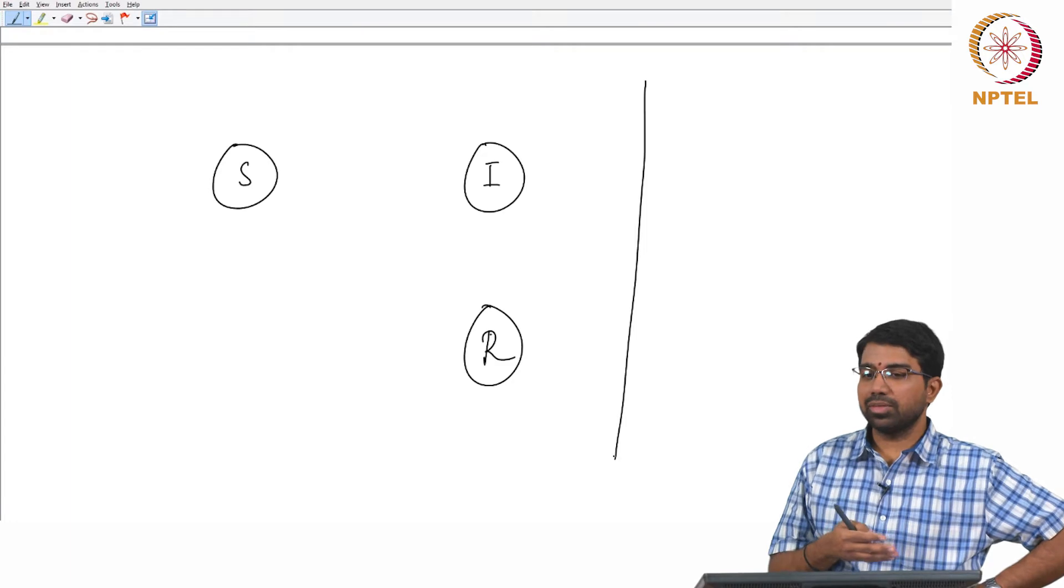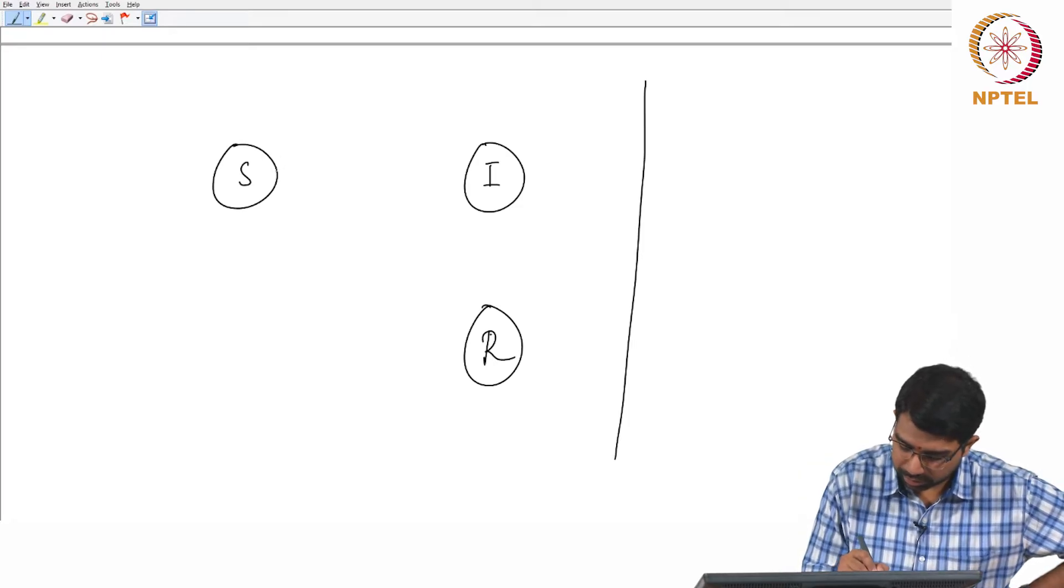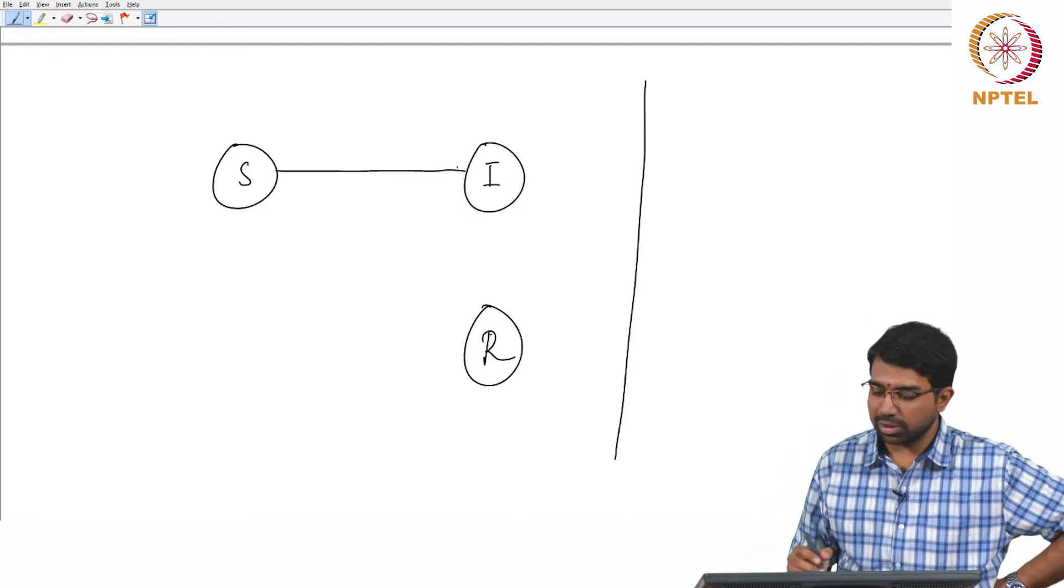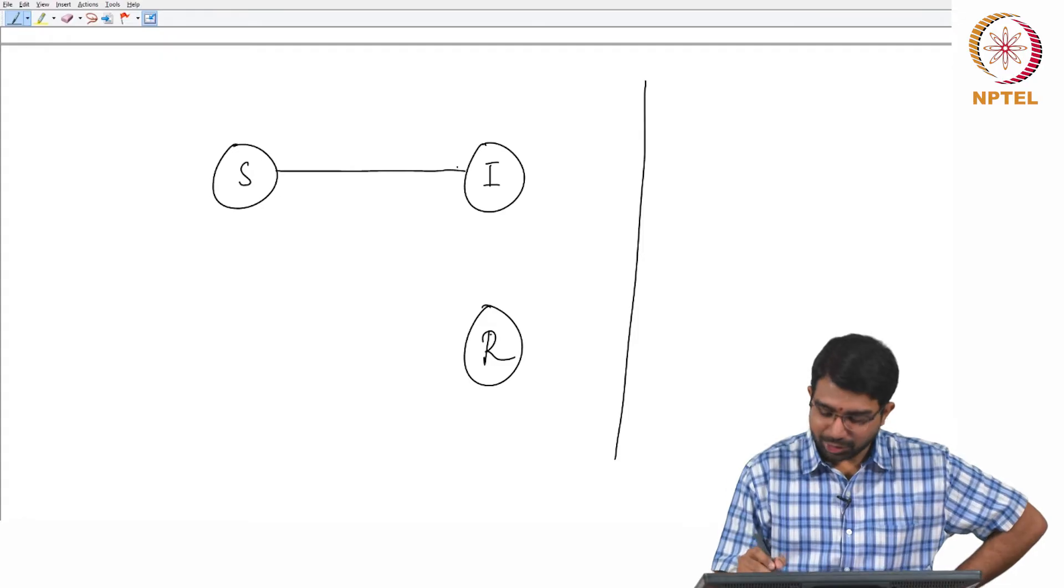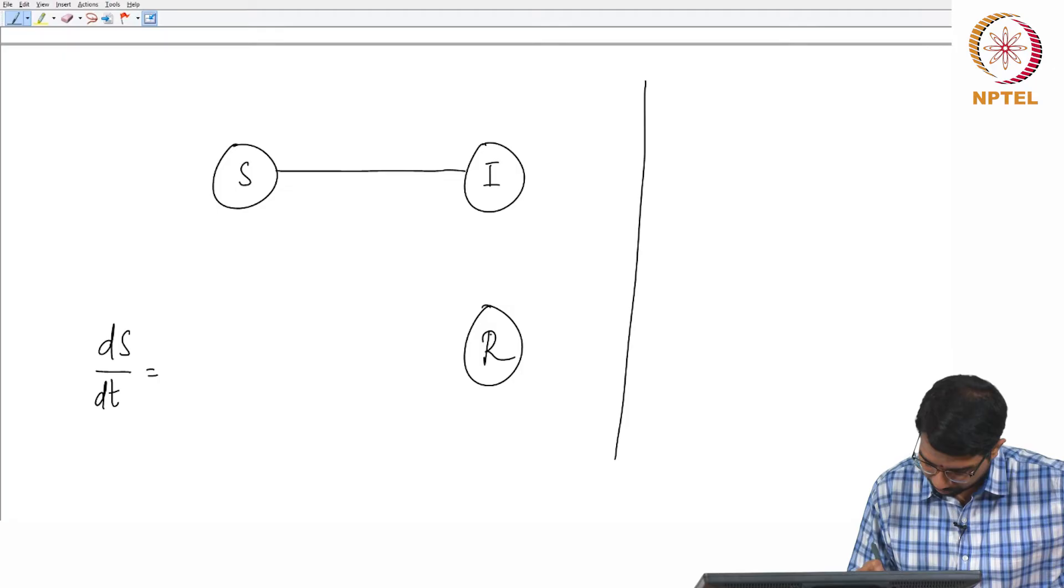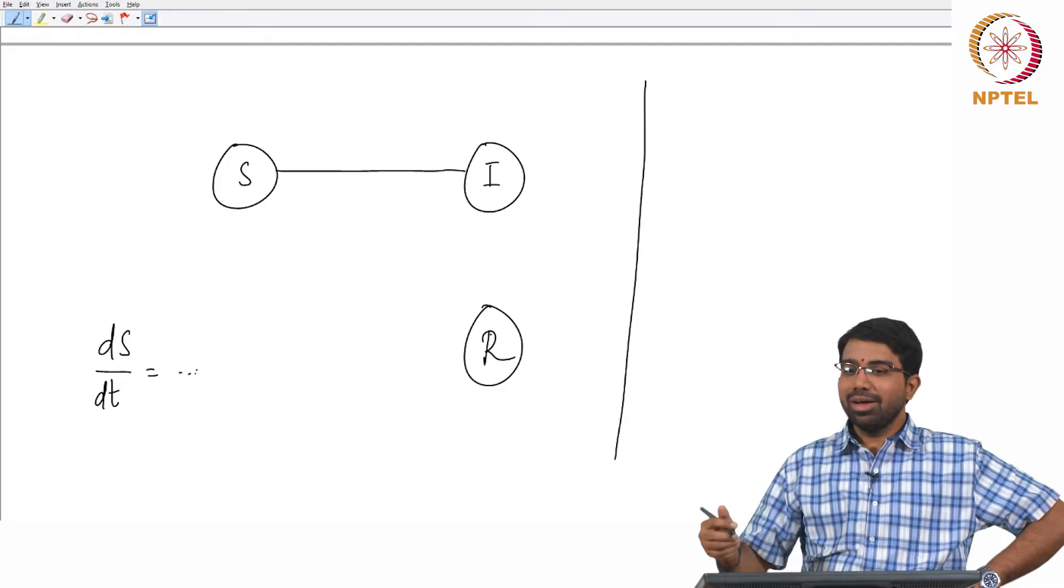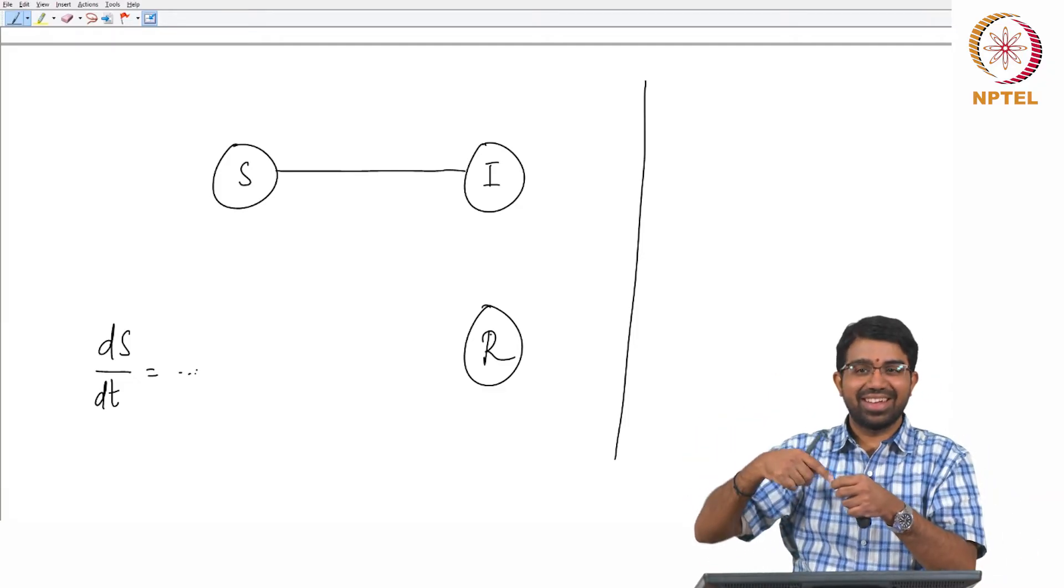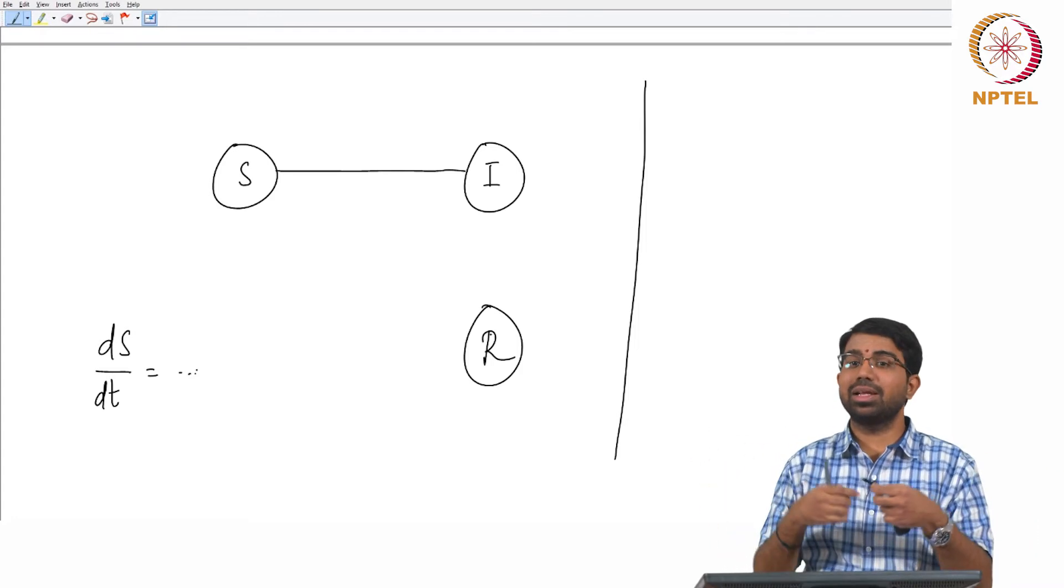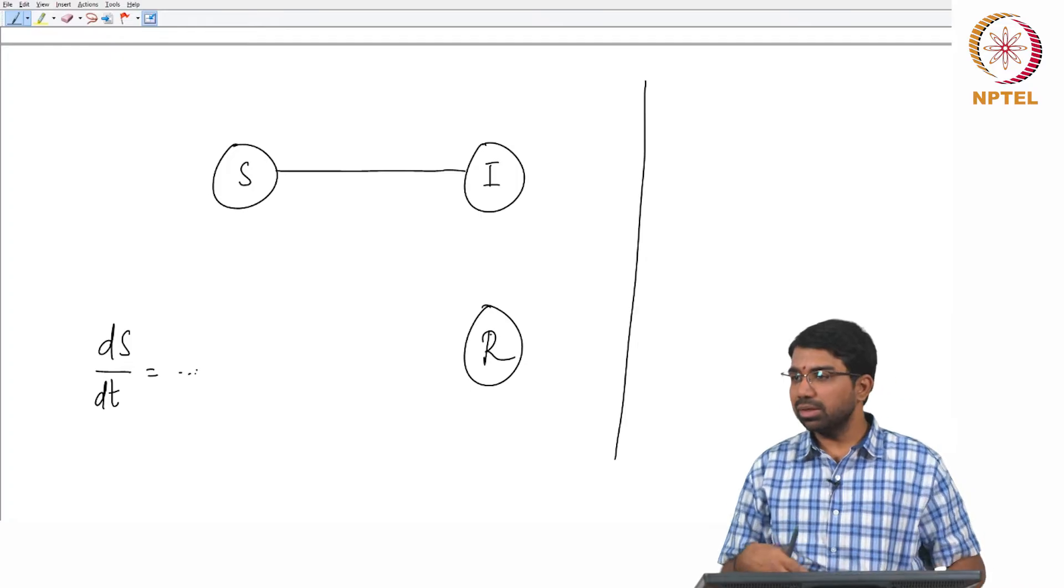Interaction between susceptible people and infected people. So you will basically have an edge here. Some sort of collision. So if I have to say something like dS by dt is something, what would my assumptions be? So the people are well mixed in a reactor. It is the equivalent of that. The people are very likely to interact. Everybody is equally likely to interact with everybody else.